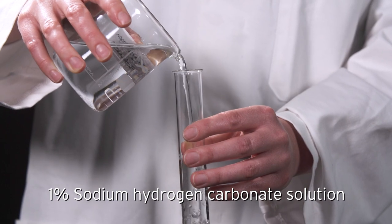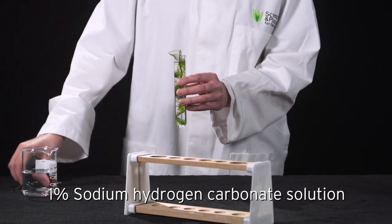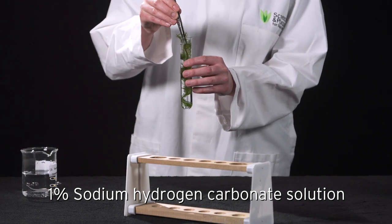Another rate limiting factor for photosynthesis, the availability of dissolved carbon dioxide in the water, can be eliminated by placing pondweed in a 1% sodium hydrogen carbonate solution that has also been allowed to come up to room temperature, instead of just water.